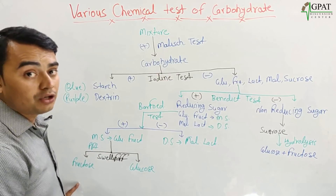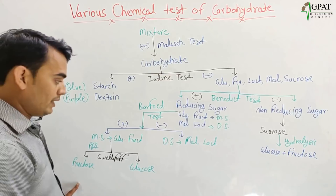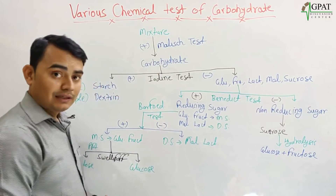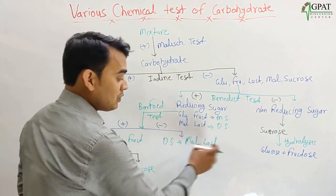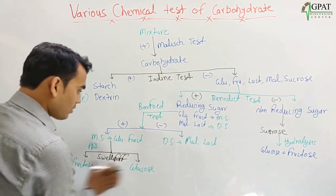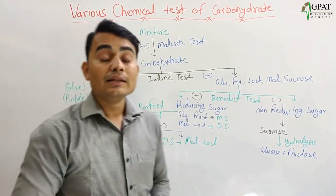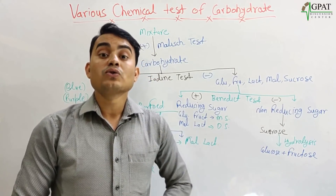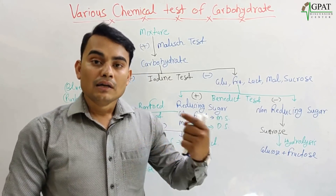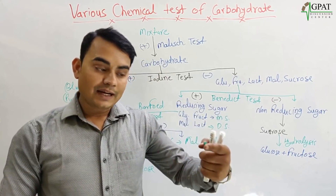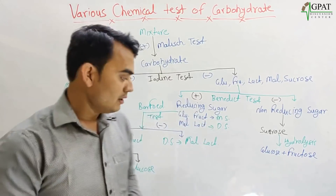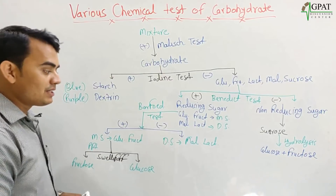For the disaccharides — maltose and lactose — and also glucose and fructose, all are identified on the basis of the osazone test. They are identified by their different crystal forms in the osazone test.